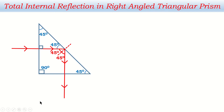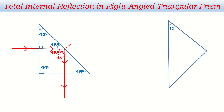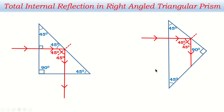Since 45 degrees exceeds the critical angle of 42 degrees, total internal reflection occurs and the angle of reflection is 45 degrees. The ray then travels through the normal for the next face and exits straight. If the same right-angle prism is oriented differently, light entering through the normal passes straight, undergoes total internal reflection at 45 degrees on one face, then again at 45 degrees on the next face, reflecting back each time since the angle exceeds the critical angle.